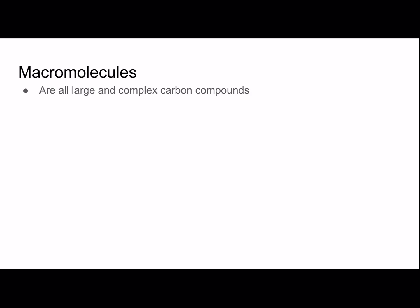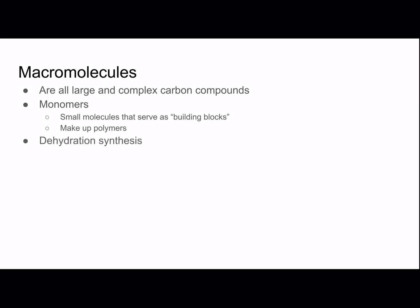Macromolecules are all large and complex carbon compounds, and they're made up of monomers, which are small molecules that serve as building blocks, and they make up polymers. Polymers are several monomers put together, and this happens through dehydration synthesis. Monomers are linked together by the removal of a water molecule, and this will create polymers.